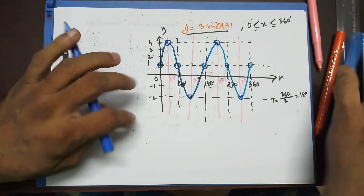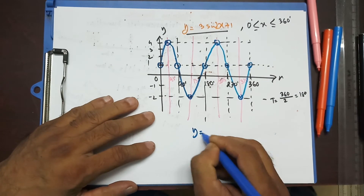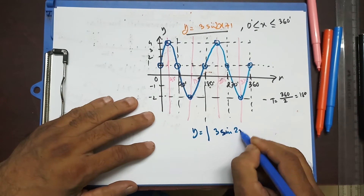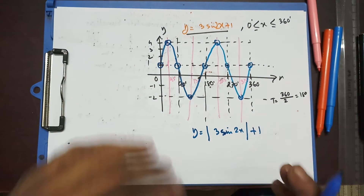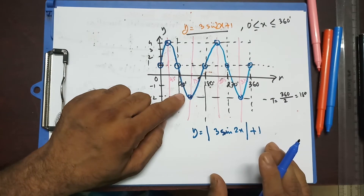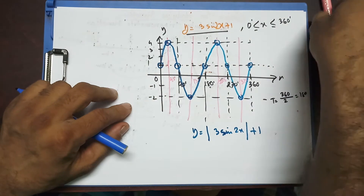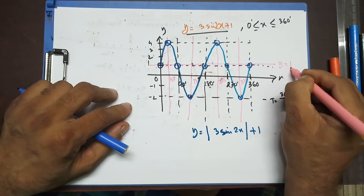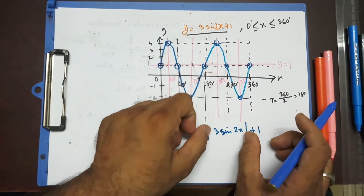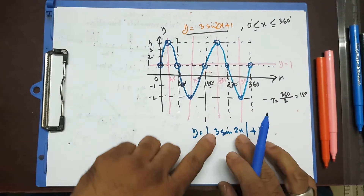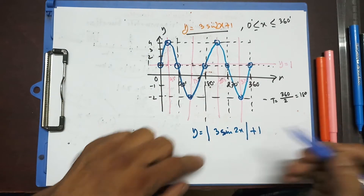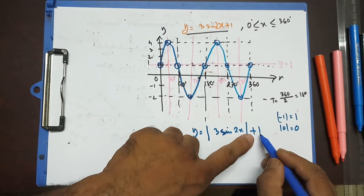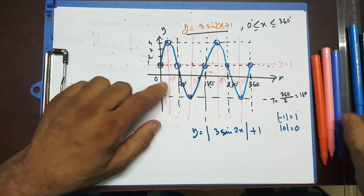Now if I write y = |3sin(2x)| + 1, what happens? This whole expression inside the modulus is going to be positive, so the graph gets reflected on the baseline y = 1. The lowest value the modulus part can take is 0, so 0 + 1 = 1 is the minimum. Any part of the sine wave that dips below y = 1 will be reflected upward onto that line.